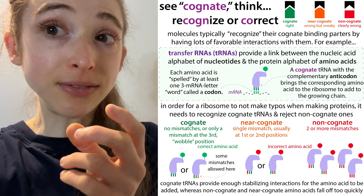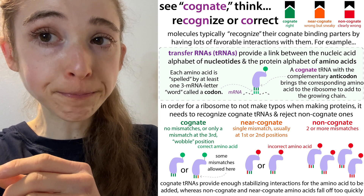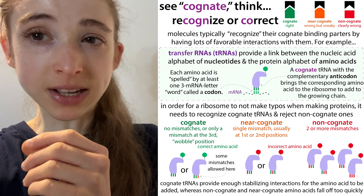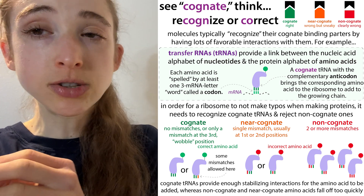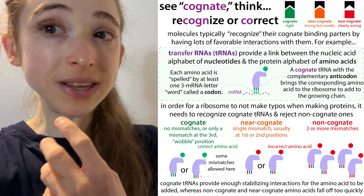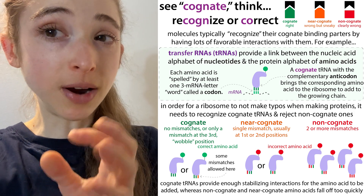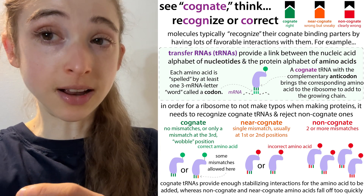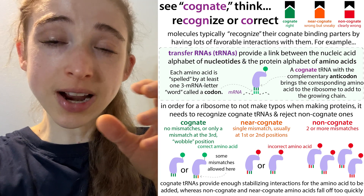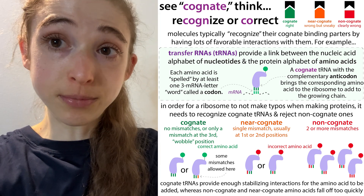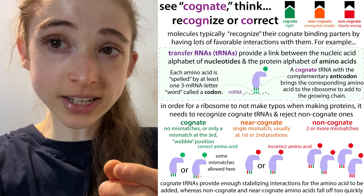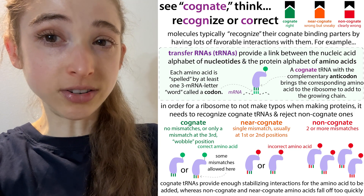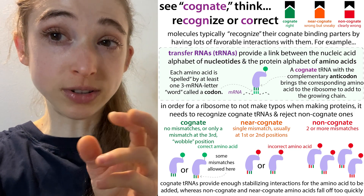Things that are near-cognate have one position differ, but that's not the third position typically. Instead it's either the first or second position, where the requirements are stricter and you don't get the flexibility of the wobble position. If you have a mismatch at the first or second position, this is going to be a near-cognate tRNA and the ribosome needs to reject it. If you have both of those positions be different, now you have a totally non-cognate tRNA that's easier to reject because there are fewer favorable interactions — it's basically just going to bind transiently and then hop back off. So non-cognate tRNAs are more easily distinguished and rejected than near-cognate tRNAs that have a mismatch in the first or second position.